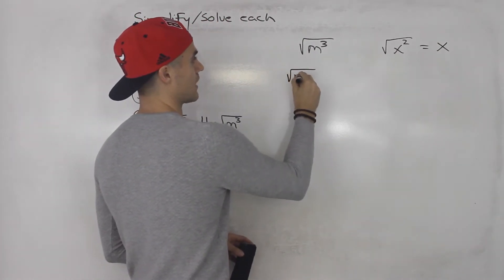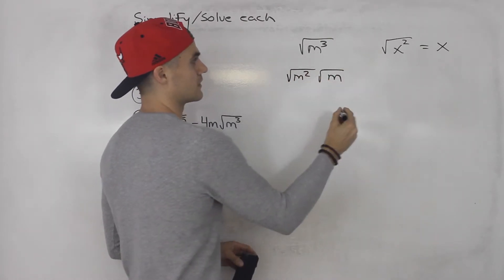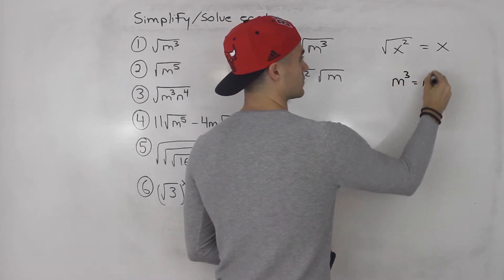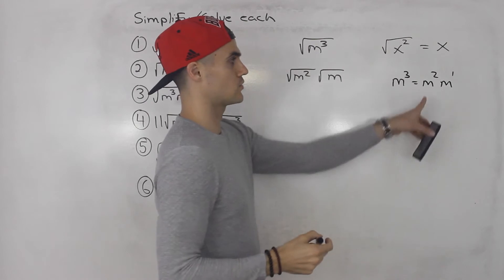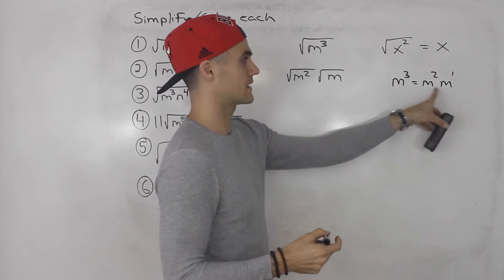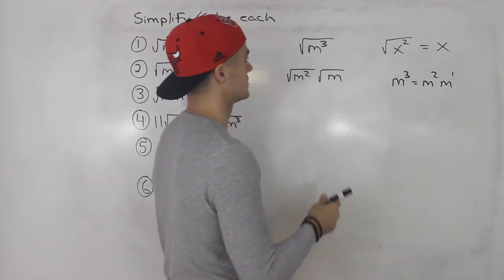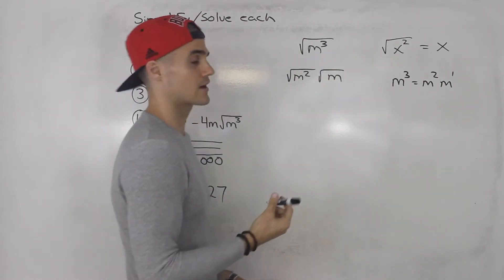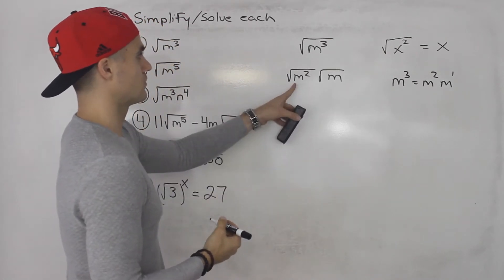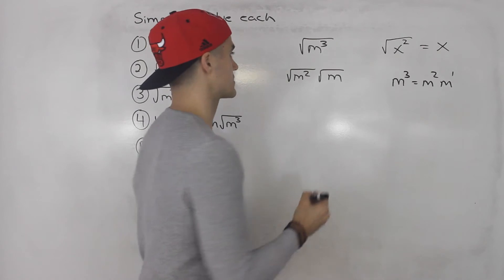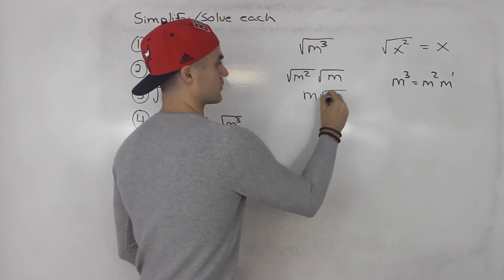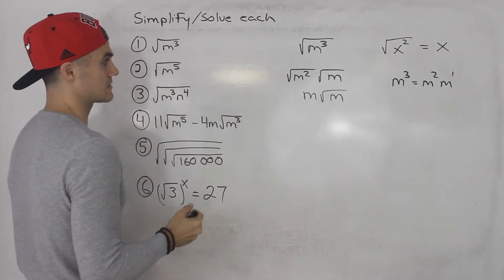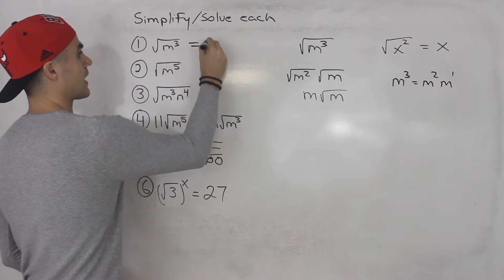So notice with this we can break down m cubed into root m squared times root m, because m cubed equals m squared times m to the first — when multiplying exponents with the same base, you add the exponents. So the 3 breaks down into 2 and 1. The square root of m squared is m, and the square root of m can't be simplified further, so the answer is m root m.